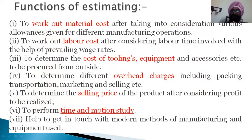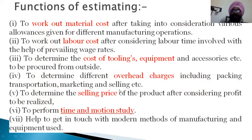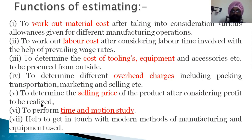Then there is the cost of tooling, equipment, and accessories to be procured from outside. Overhead charges cover indirect costs like packing, transportation, marketing, and selling — not directly involved in production but accounted for in overheads. Finally, we determine the selling price by considering the profit to be realized — for example, a 10% profit — and fix the selling price accordingly.